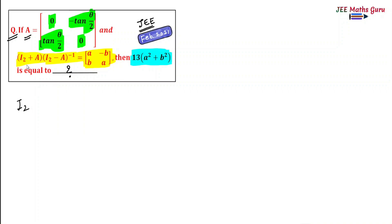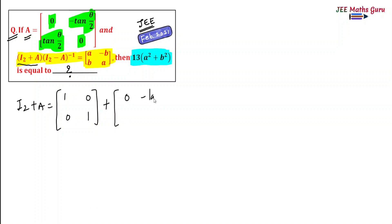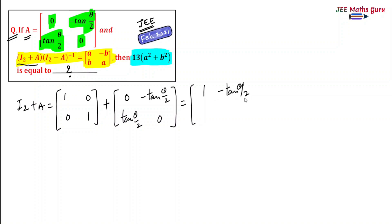First of all, I have to write the matrix I₂ + A. I₂ is the identity matrix of order 2. So it is [1 0 / 0 1] plus this matrix A whose elements are 0, −tan(θ/2), tan(θ/2), and 0. So this is the matrix I₂ + A.